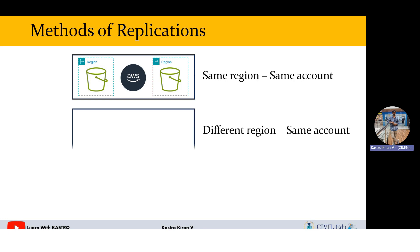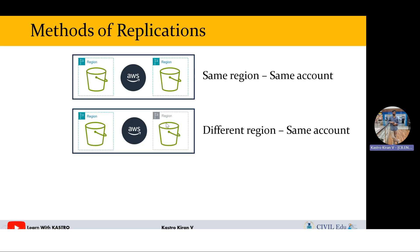The second method of replication is different region but same account. For example, one S3 bucket is in the Mumbai region and another bucket is in the North Virginia region, but both buckets are in the same AWS account. You replicate objects between two different regions within the same account.